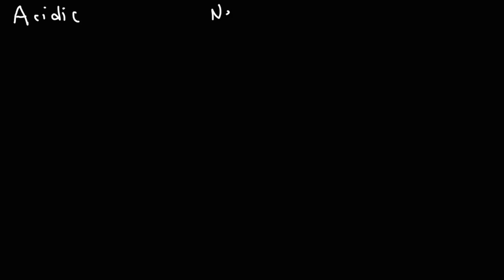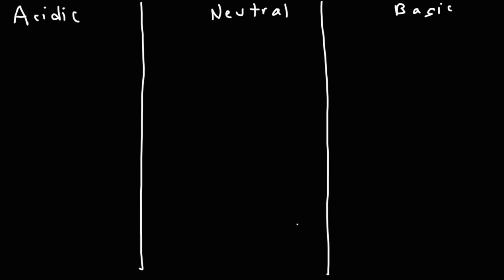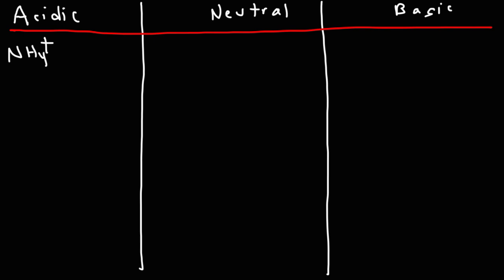Now let's make a list of all the ions that are considered acidic, neutral, and basic. Starting with the acidic ions: the ammonium ion (NH4+) is a weak acid, since NH3 is a weak base. Metal ions with very high positive charges — like Al3+, Fe3+, or Pb4+ — are acidic metal cations. They can ionize water and release H+ into solution.